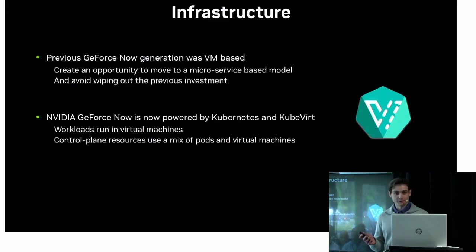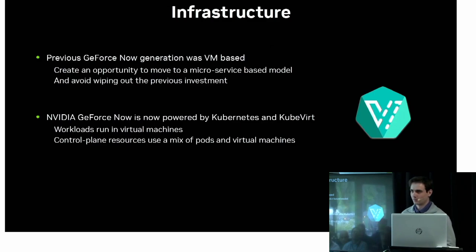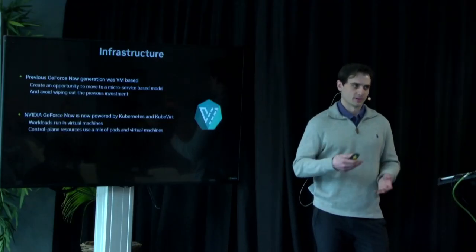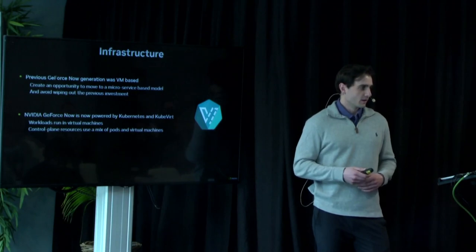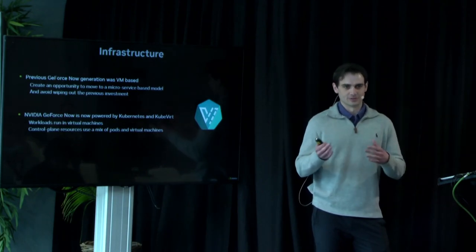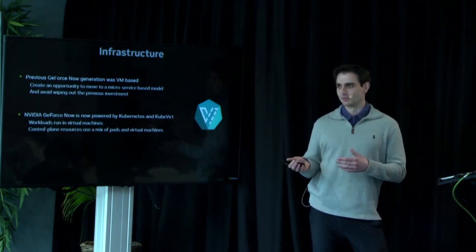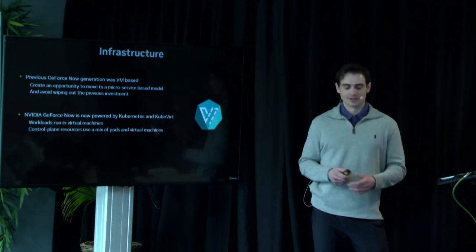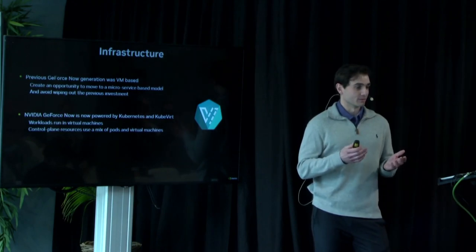I also want to talk about the infrastructure behind this. GeForce Now was faced with a problem a few years ago. The original architecture is very VM-based, focused on the monolithic model — we create VMs and provide those as our control plane, with workloads running in VMs. We wanted to move to a more microservice-based approach. The question was: how do we do this? We know we want to go to Kubernetes and use containers — how do we move without completely abandoning our investment? This is where we looked at adopting KubeVirt.